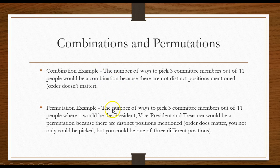A permutation, the number of ways to pick three committee members out of 11 people, where one would be the president, vice president, and treasurer. What I mean by that is one would be the president, one would be the vice president, one would be the treasurer. So, not only could you be picked, you could be one of those three positions, so that would be a permutation.